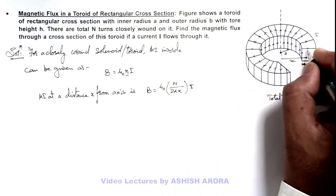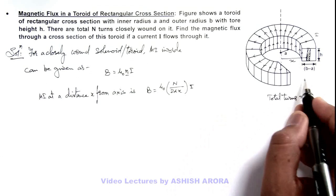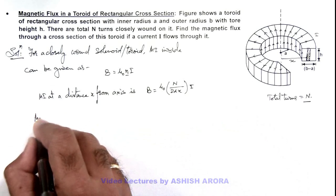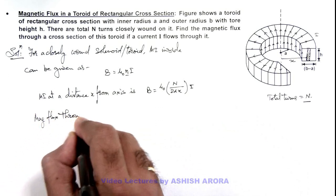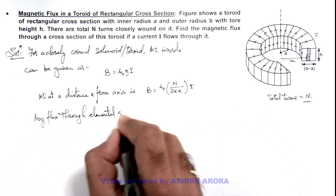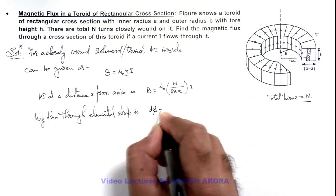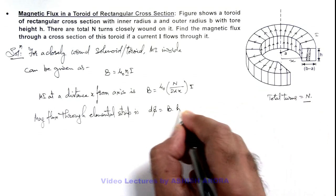So here we can consider a small elemental strip in the cross section where we can assume this magnetic induction is uniform. The magnetic flux through the elemental strip is dφ = B·dA, and the area of this strip will be h·dx.